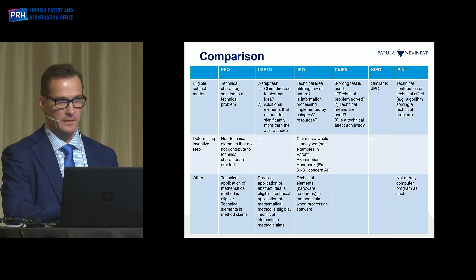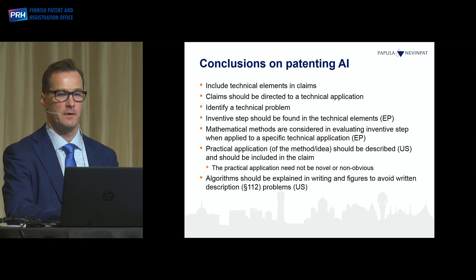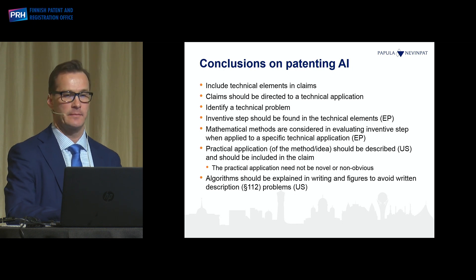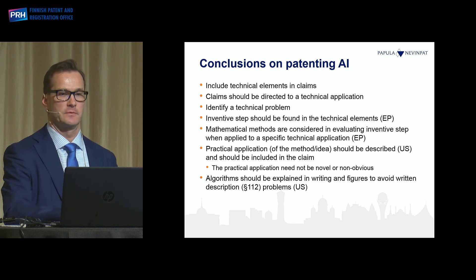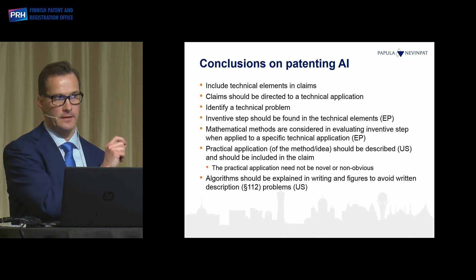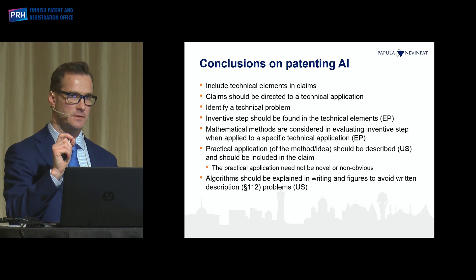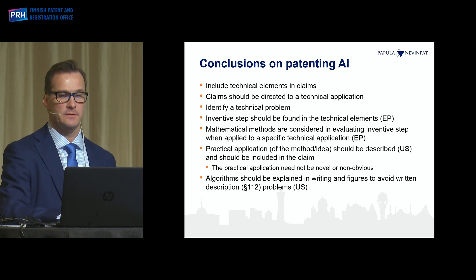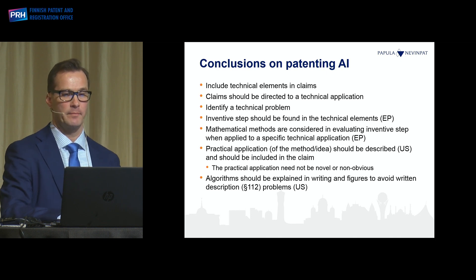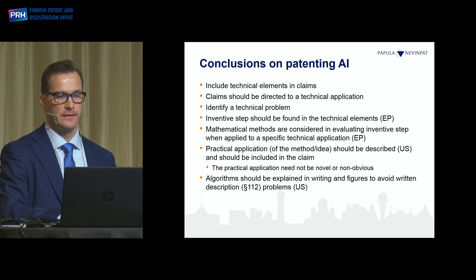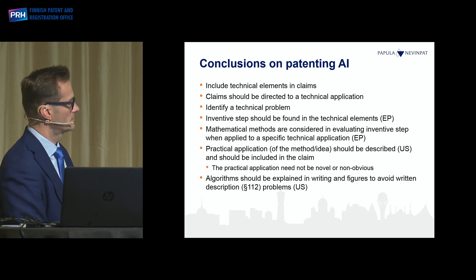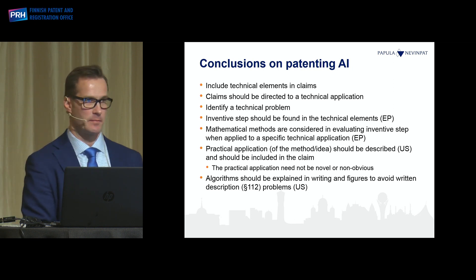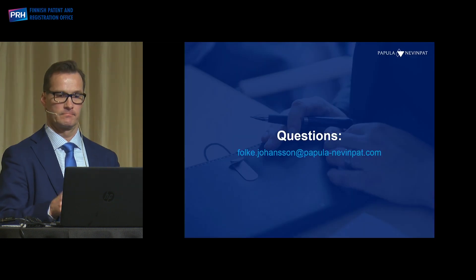My final conclusions: include technical elements in claims and direct your claims to a technical application — if you can do that, you are successful. Try to identify the technical problems, which could be AI-related or something else. At the EPO, inventive step should be found in the technical elements. Mathematical methods are considered in evaluating inventive step when applied to a specific technical application. In the U.S., you have to find a practical application. And you should describe algorithms in your description. Thank you.